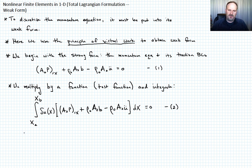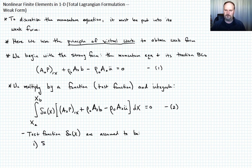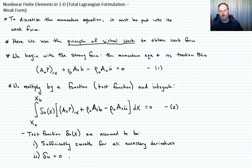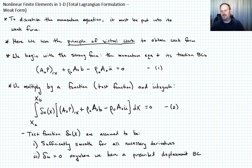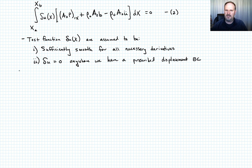The requirements on the test function δu are the same as for a weight function. First, it must be sufficiently smooth with whatever derivatives are needed. Second, δu must equal zero anywhere we have a prescribed displacement boundary condition — this is the same requirement as for weight functions when the primary variable has a boundary condition.